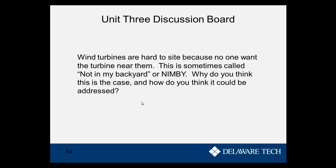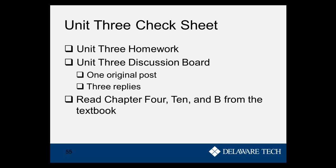For the discussion board: windy places exist where we could place wind turbines, but often they're hard to site because people don't want them nearby — sometimes for legitimate reasons, sometimes it's called NIMBY, or 'not in my backyard.' Why do you think people don't want wind turbines near them, and how do you think this problem could be addressed? At the end, we have the Unit 3 check sheet. This was a long unit and the homework will be difficult. You have Unit 3 homework, one discussion board original post and three replies, and you can also read Chapters 4, 10, and B from the textbook.